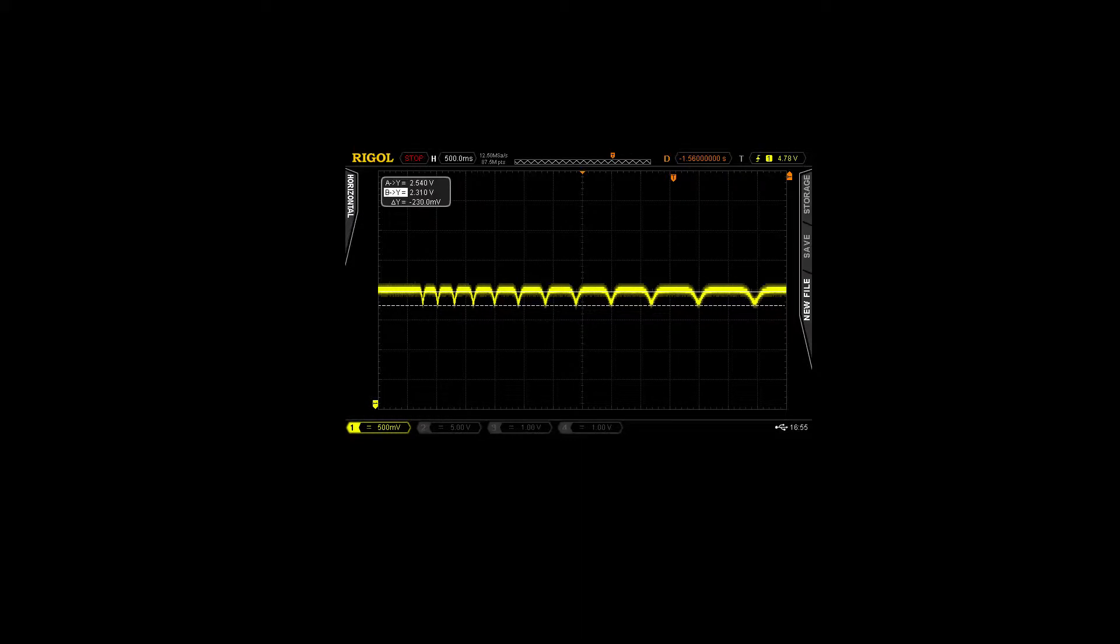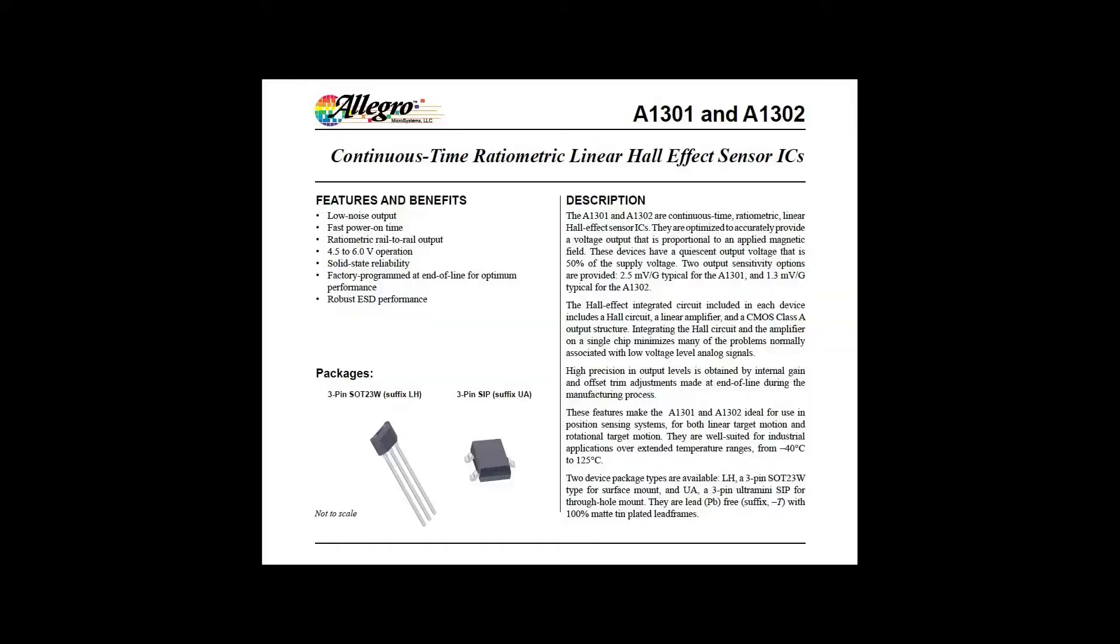And the waveform I get looks like this. The downward spikes correspond to the point where the magnet in the anemometer cup comes closest to the Hall effect sensor. I've measured the depth of those spikes as 230 millivolts. The sensor I'm using generates 2.5 millivolts per gauss. So that means that the magnetic field in the location of the sensor is 92 gauss. Which should be more than enough to operate a Hall effect switch if I put one in that position.